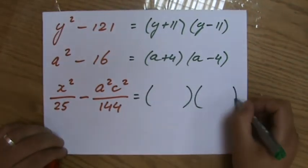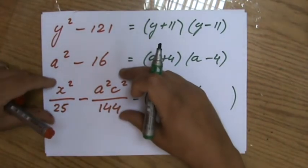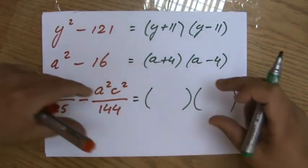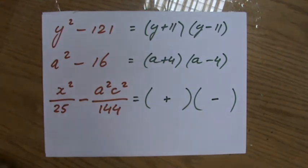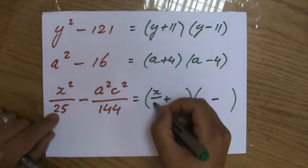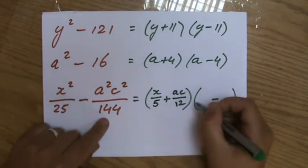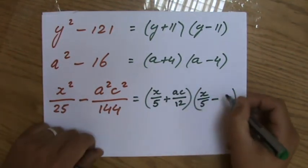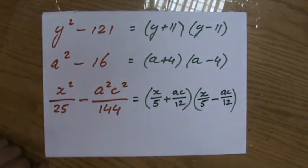Because there's no common factor. This is not grouping. This is not normal factoring. There's a difference. And we see all these squares here, don't we? So what am I going to put here? Let me just put a plus. Let me put a minus. I'm going to take basically the root of everything. So x squared becomes x over 5, ac over 12, x over 5 minus ac over 12. That's all. That's all the difference of two squares. Fantastic.